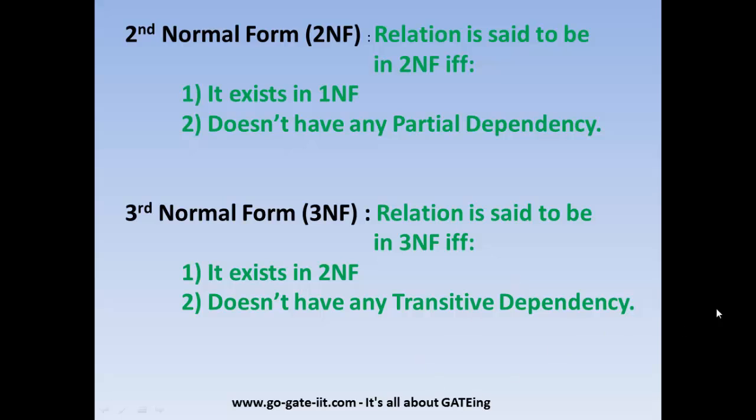Third normal form says that it should be in 2NF and it should not contain any transitive dependency. Transitive dependency has two cases: one where the determinant side has a non-prime attribute and the dependent side also has a non-prime attribute; and a second case where a part of candidate key plus a non-prime attribute is on the determinant side, and on the dependent side we have a non-prime attribute. For a third normal form to exist, it should be in 2NF and should not have any transitive dependency.